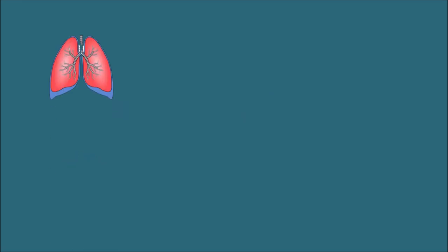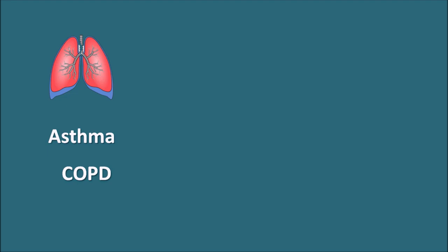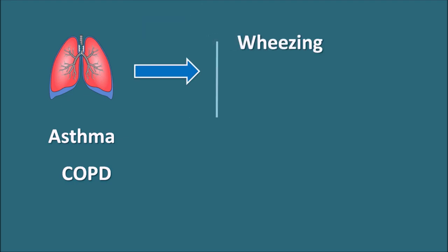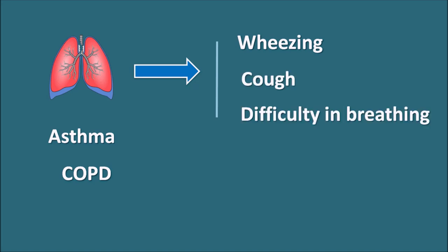One of the important disorders related to the respiratory system is asthma. Asthma is a reversible bronchoconstriction which produces difficulty in breathing. Another related disorder is COPD, Chronic Obstructive Pulmonary Disorder. COPD results in irreversible bronchoconstriction and many times it is an emergency condition requiring hospitalization. Both disorders produce bronchoconstriction resulting in symptoms like wheezing, cough, and difficulty in breathing.